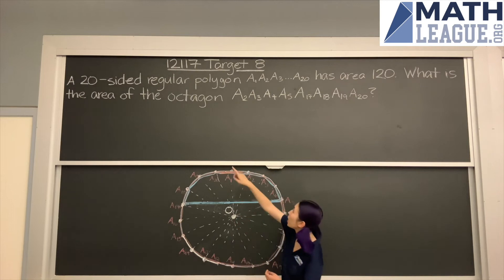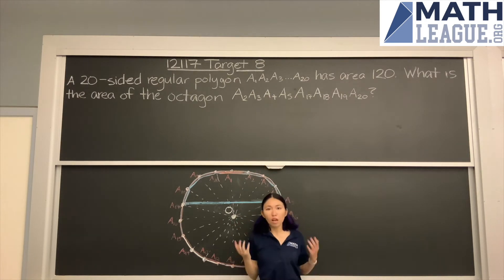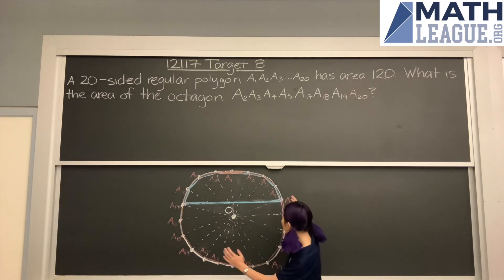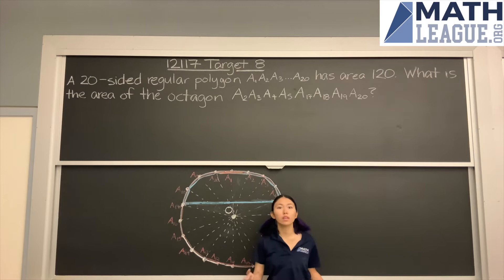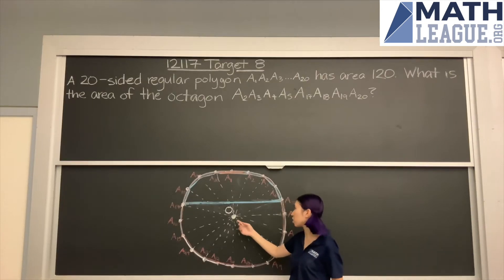So we have a 20-sided regular polygon. That's key. In fact, all regular polygons are cyclic. In other words, we can circumscribe a circle around the polygon. So A1, A2, all the way up to A20 are on this white circle. We'll call it center O.